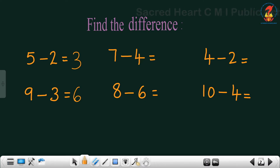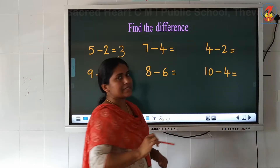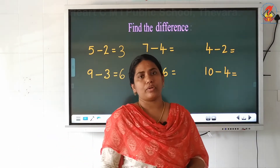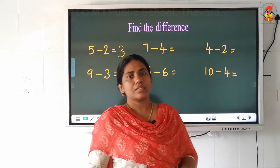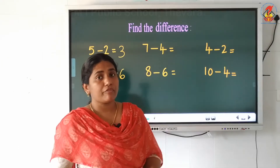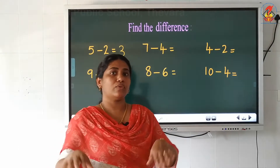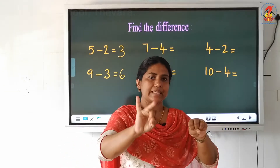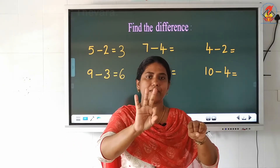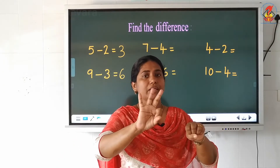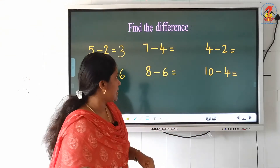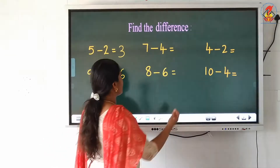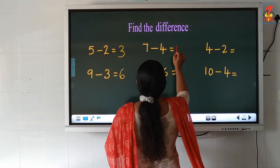Now look at the next question: 7 minus 4. Which is the small number? 4. So start counting after 4: 5, 6, 7. How many fingers did I raise? 3. So 3 is our answer.